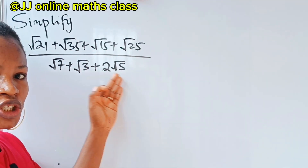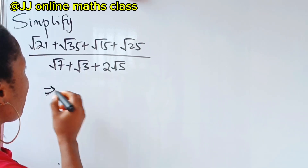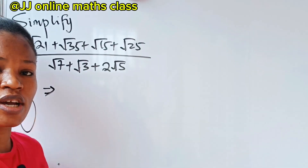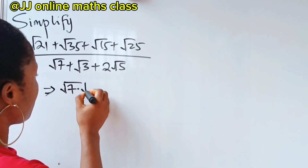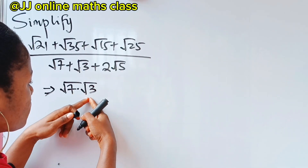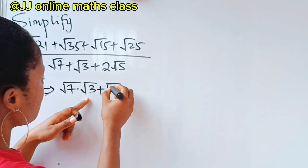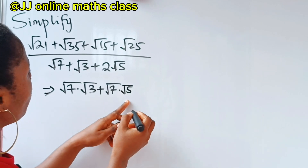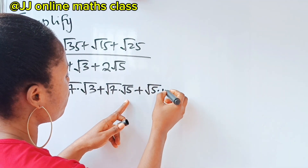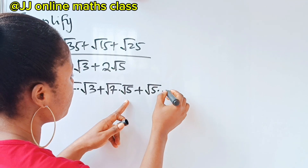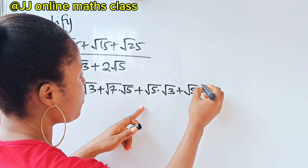So √21 can be rewritten as √7 × √3, since 7 multiplied by 3 gives 21. Plus, √35 is √7 × √5. Plus, √15 is √5 × √3. Plus, √25 is √5 × √5.